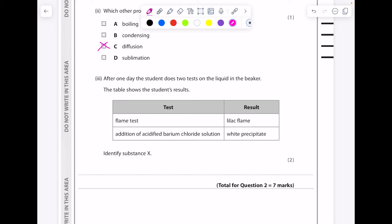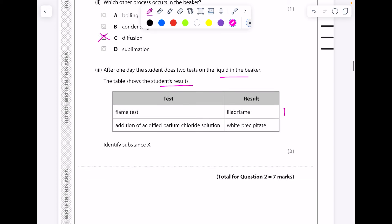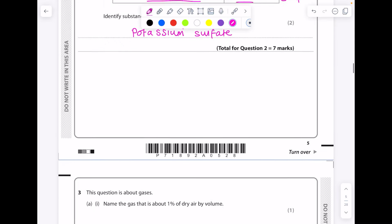After one day, the student does two tests on the liquid in the beaker. The table shows the student's results. Identify substance X. So the flame test produces a lilac flame, which indicates that we have potassium ions. If we have acidified barium chloride solution, we see a white precipitate, which means we have sulfate ions. So this substance, always put the metal first, must be potassium sulfate. It's really important that you learn those chemical tests.